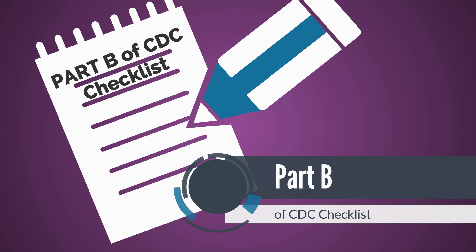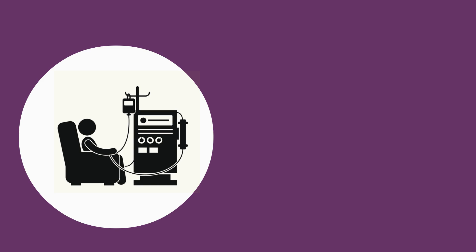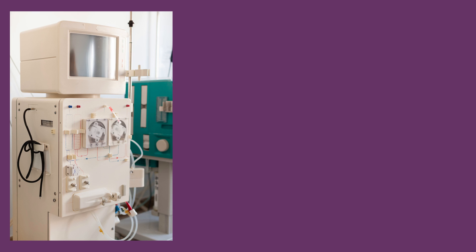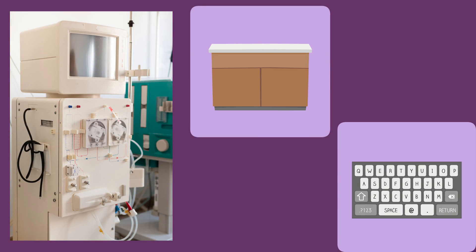Remove gloves and perform hand hygiene. Once Part A of the checklist has been completed, move to Part B: Routine disinfection of the dialysis station after the patient has left. Part B includes step-by-step instructions on PPE use and surface disinfection. Wear clean gloves. Apply disinfectant to all surfaces in the dialysis station using a wiping motion along with friction. These surfaces include the dialysis chair, tray tables including under the tray tables, blood pressure cuffs, and IV pole including the top hooks. Disinfect frequently touched surfaces including the dialysis machine control panel, top, front and sides, touch screens, as well as any countertops and computer keyboards in the patient station.